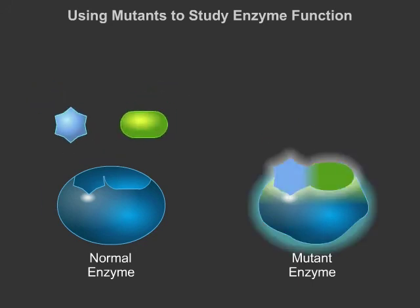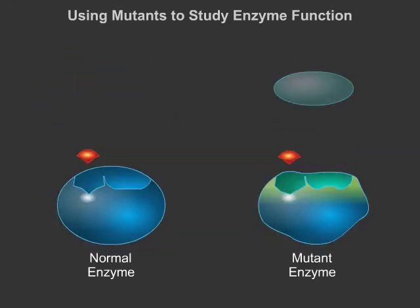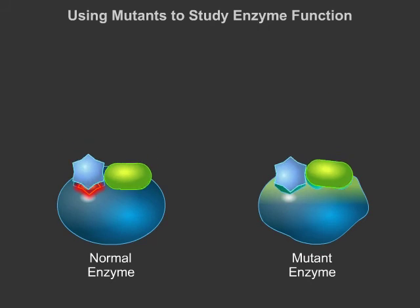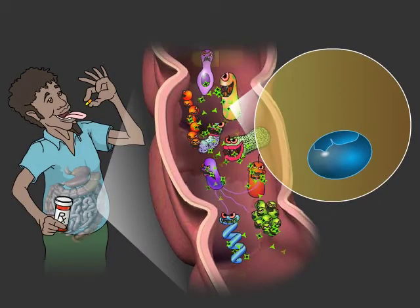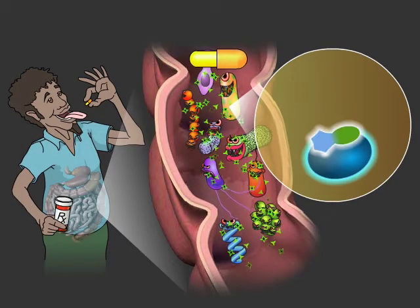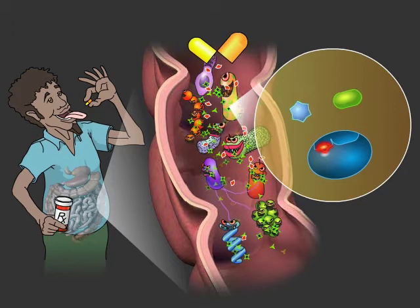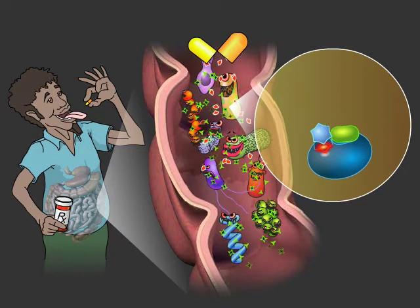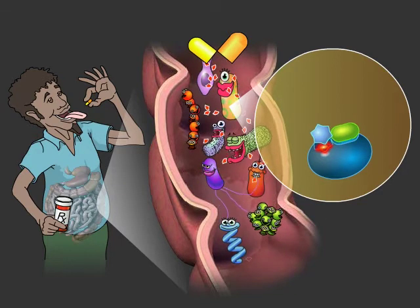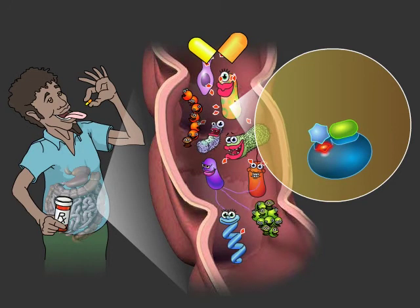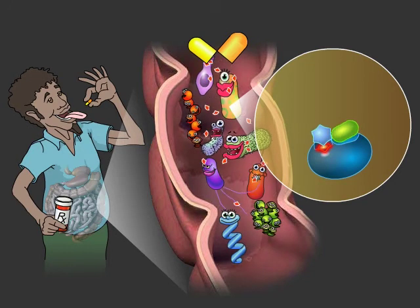Once we know how the enzyme works, we can more easily design better inhibitors. By gaining a better understanding of how enzymes work, we can better design small molecules that inhibit their activity, and that possibly have a chance to help us fight heart disease, drug-resistant infections, and many more microbially related diseases.